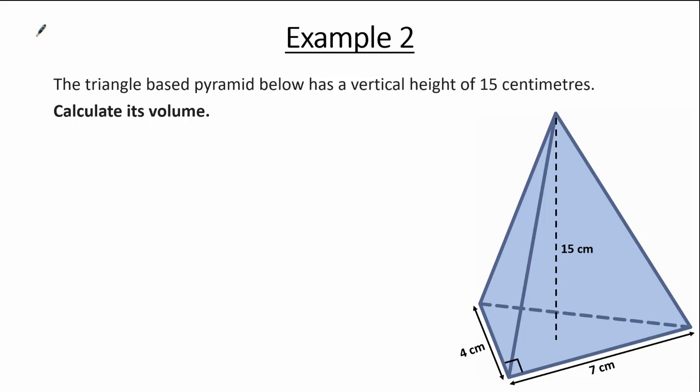In example two, we are given: the triangle-based pyramid below has a vertical height of 15 cm — calculate its volume. In this example, the base is not a square but a triangle, and the vertical height is given as 15 cm. You can now pause this video and try finding the volume yourself. When you are ready for the solution, please press play.